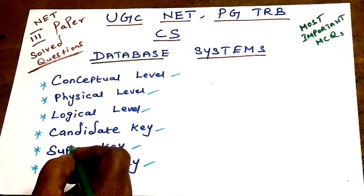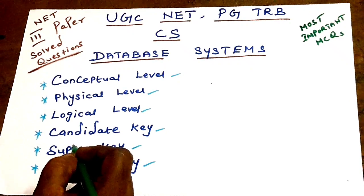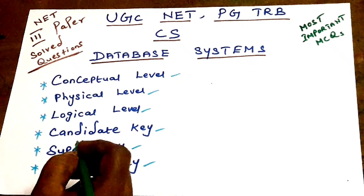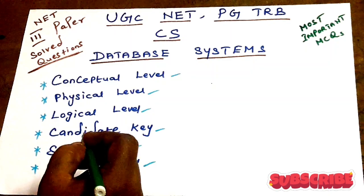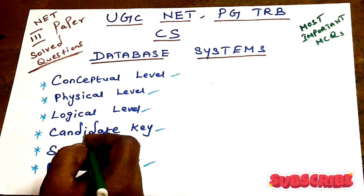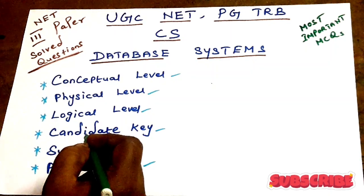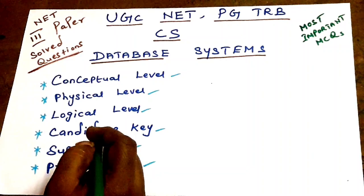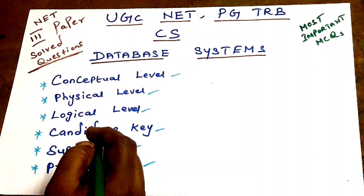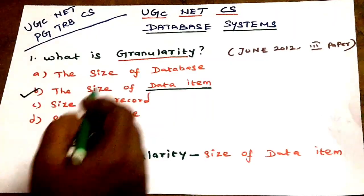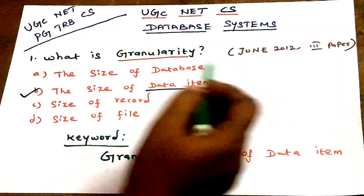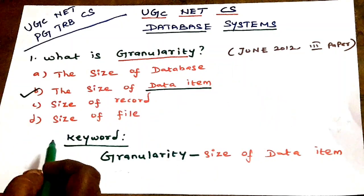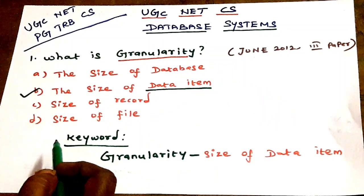Hi friends, welcome to Business Years at Night Education Channel. In this video, we discuss database systems previous year UGC NET questions, third paper questions — 12 questions in total.